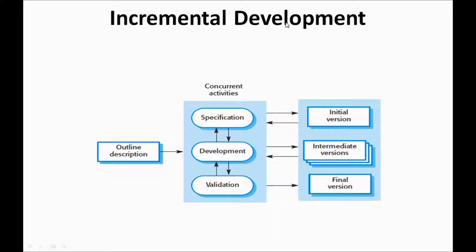The code is developed in the form of increments — that's why it is called incremental development. Increment one is the first feature, increment two is the second feature, increment three is the third feature, and so on. Increment one and increment two can be developed in parallel. That is the main advantage of incremental development — concurrent activities are possible.